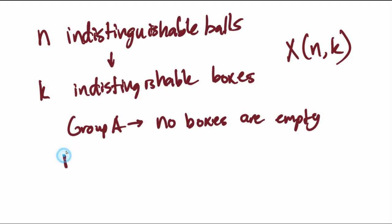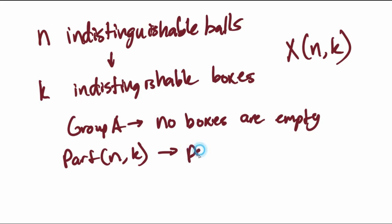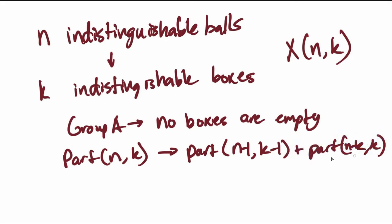There's actually a notation for this — it's the way you partition n into k boxes. The partition notation indicates that none of the boxes are empty. And the formula for this is that there is no easy closed formula because it's a recurrence relation. It would look like this: the number of ways to partition n indistinguishable balls into k indistinguishable non-empty boxes equals partition(n-1, k-1) plus partition(n-k, k).